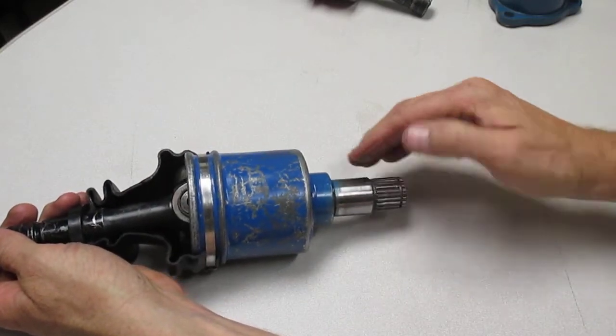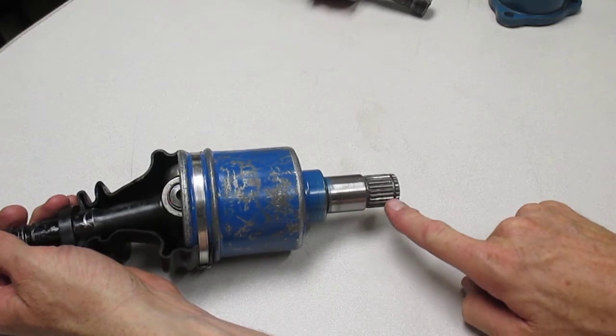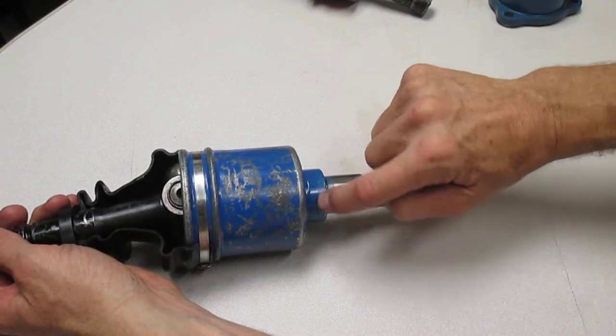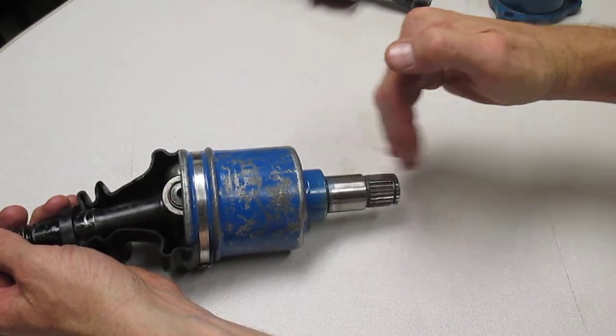Of course, here's the other components of the inboard shaft. You've got your splines that slide into the axle gear, the transaxle. That's where your axle seal would ride and keep the oil, transmission oil in.